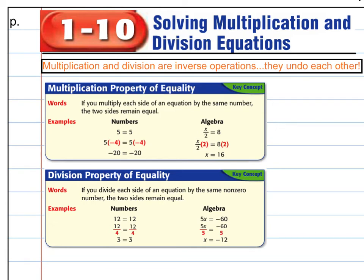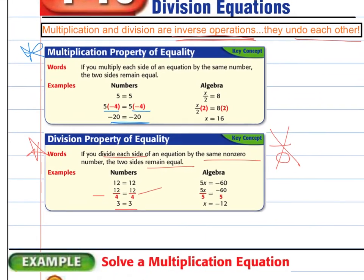Multiplication and division are inverse operations. Just like we learned about addition and subtraction being inverse operations, that means they undo each other. If I add something on, to take it away, I subtract it off. The multiplication property of equality says that whatever you multiply to one side, if you multiply that to the other side, they will remain equal. Division property says the same thing. Whatever you divide, if you divide each side by a non-zero number, they'll remain equal as well. They're each other's inverse. They undo.